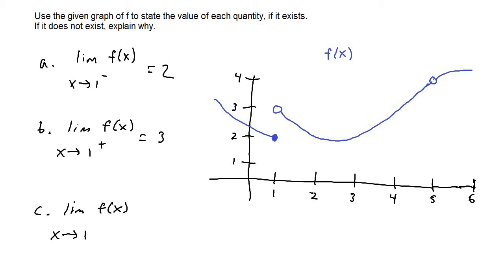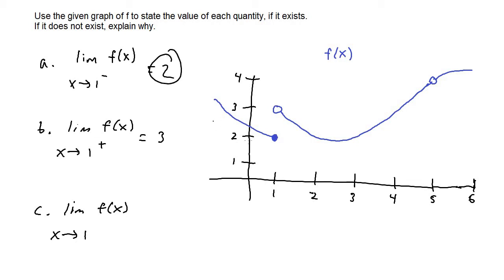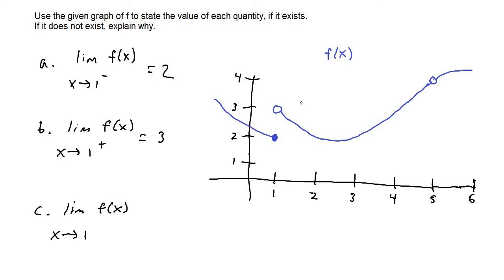For letter c, we have the limit of f of x as x approaches one. For the actual limit to exist at x equals one, the limit from the left-hand side must equal the limit from the right-hand side. The left-hand limit is two and the right-hand limit is three — two and three are not equal, so the limit does not exist because the left-hand and right-hand limits are not equal. So we put DNE — does not exist.